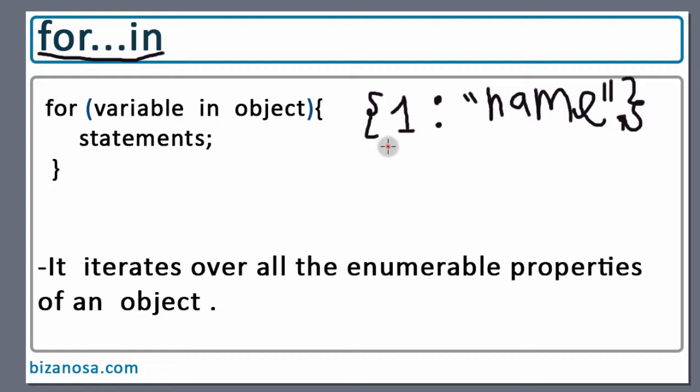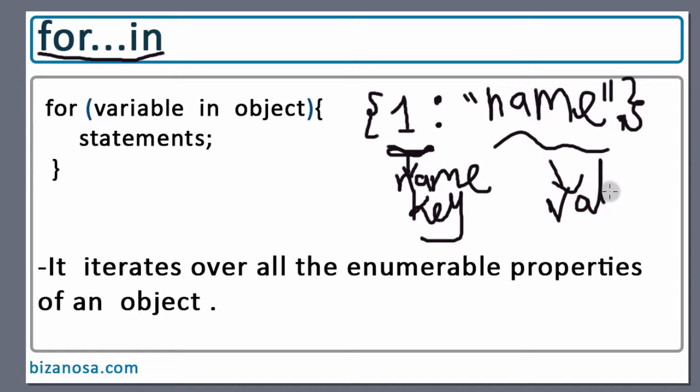So we say that that's the name of the property, and then that is a value. So this is a name or a key, and this is a value of the property. So we talked about something relating to this when we were looking at object literals.